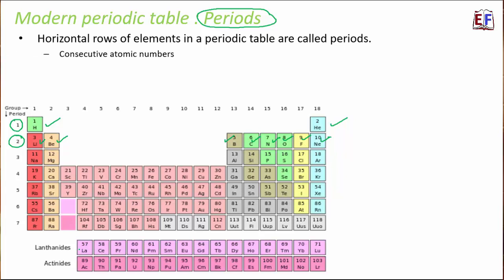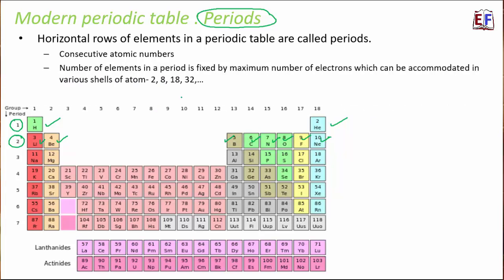Periods have consecutive atomic numbers because elements are placed one after another in order of increasing atomic number. The number of elements in a period is fixed by the maximum number of electrons which can be accommodated in the various shells of an atom.